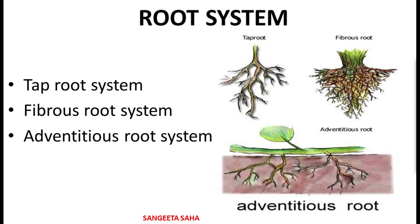Now what is tap root system? This tap root system develops from the radicle of the germinating seed and this type of root system is present in dicotyledonous plants. As you can see from the diagram, it has got a primary root. It also bears secondary and tertiary roots. The primary root along with its branches makes the tap root system, and it is found in mustard and banyan.